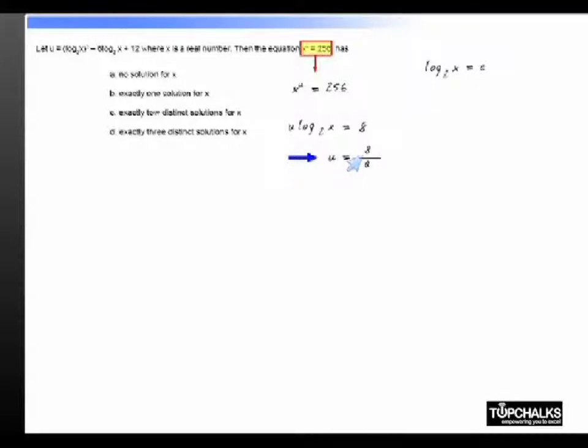Let us now substitute back to this original equation. 8 by A is equal to A squared minus 6A plus 1. Cross multiply, we will get A cubed minus 6A squared plus 12A minus 8 equal to 0.